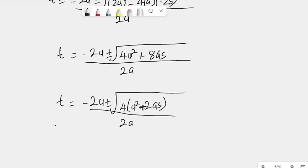Now, in this case, 4 is a perfect square, so we can take the square root of 4, so that T becomes minus 2U plus or minus 2, the square root of 4. So, there is a 2 there, then root U squared plus 2AS all over 2A.